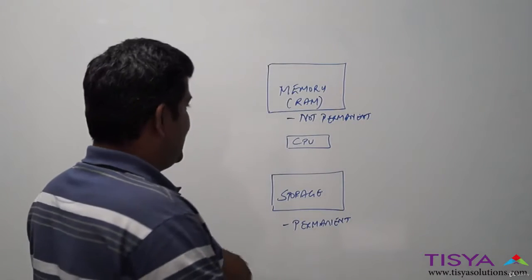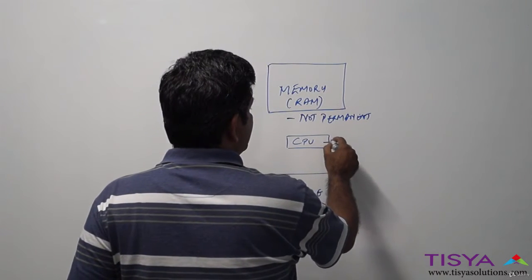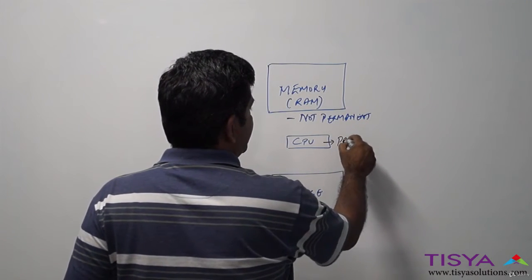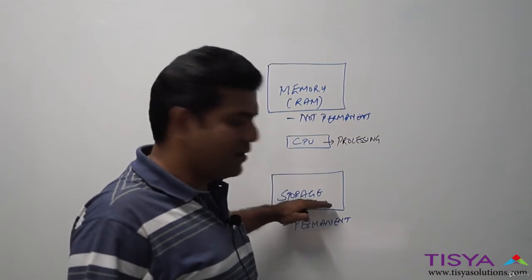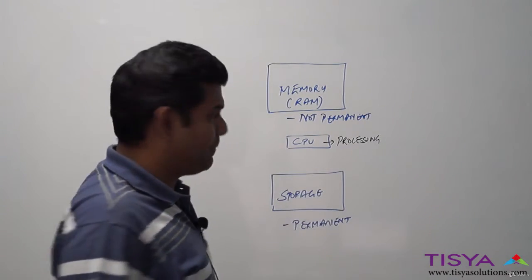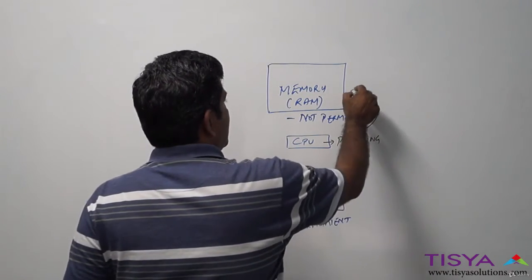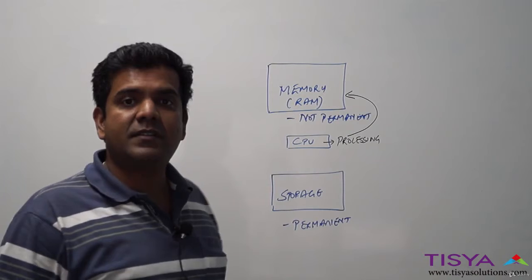What is important is that if the CPU has to do any kind of processing, it cannot do it on the disk or storage directly. It can be done only on the data that is present in the memory.